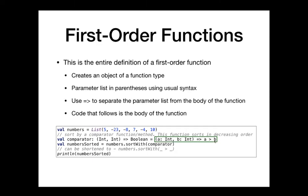This line reads just like any other value declaration and assignment. We're creating a value, naming it `comparator`. We use the colon to specify the type, then assign it the value, which is a function. The type of a function is the types of its parameters and its return type. So this `comparator` value is of type `(Int, Int) => Boolean` — it takes two ints and returns a boolean.